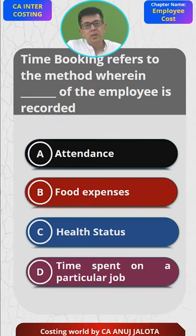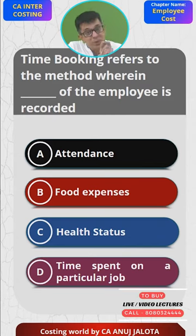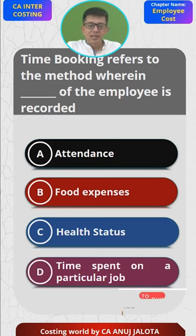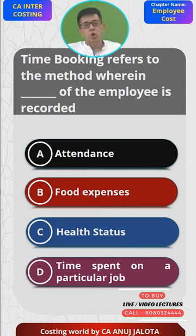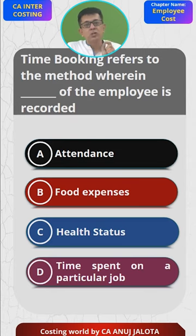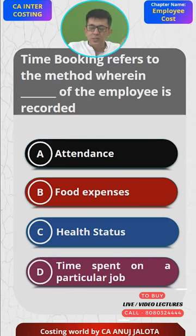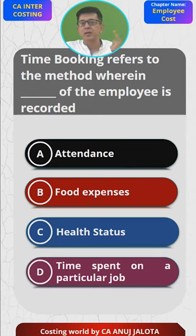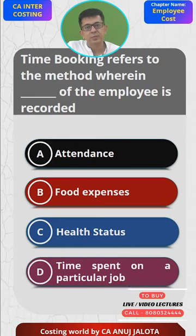Accordingly, we have to charge each and every job for the amount of time the worker spends on it. For that, we use something called time booking. In time booking, we have job cards whereby it is recorded that this worker is working on this job from this time to this time. The name of the job, time in, time out, and the supervisor's signature are all recorded.